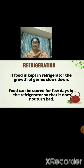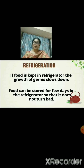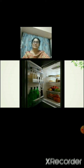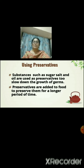Cooked food left at night — we put it in the refrigerator so that we can use it the next day. If it is not kept in the refrigerator, it turns rotten and then we cannot eat that food. Next is using preservatives. Substances such as sugar, salt and oil are used as preservatives to slow down the growth of germs.